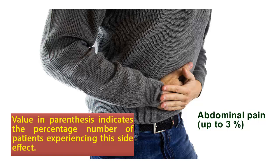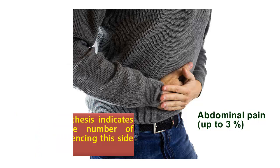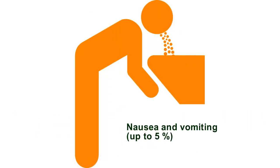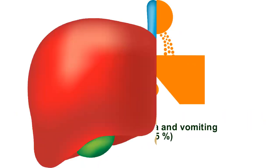Abdominal pain: up to 3%. The value in parenthesis indicates the percentage number of patients experiencing this side effect. Nausea and vomiting: up to 5%.